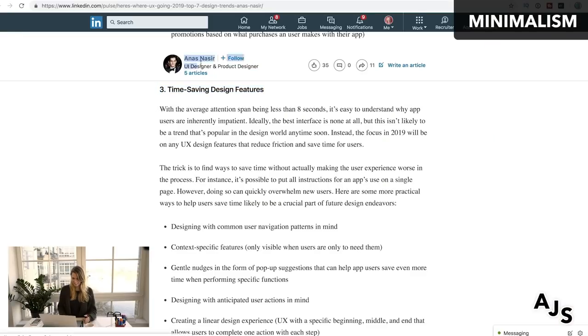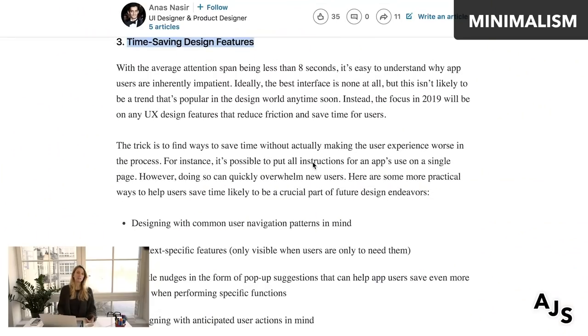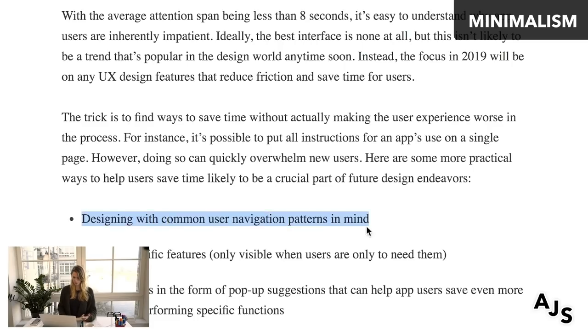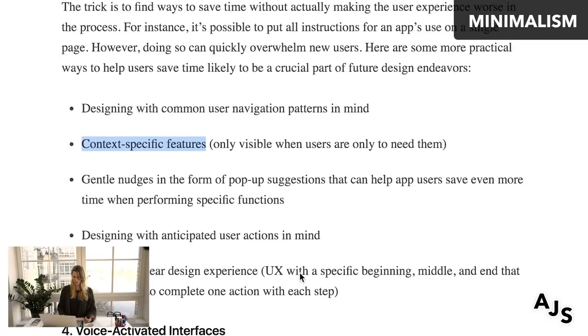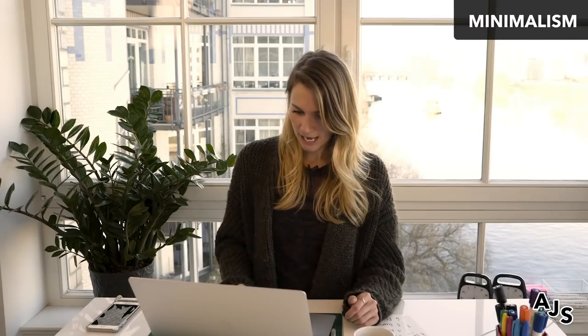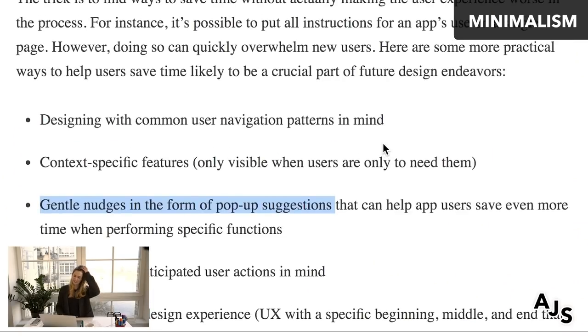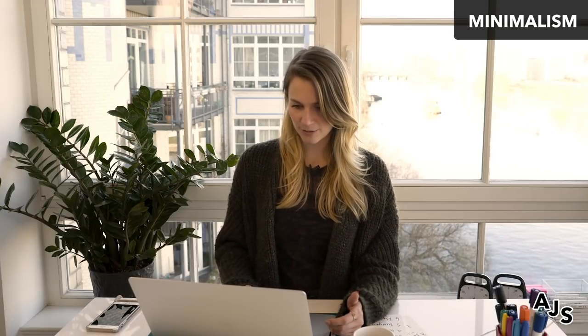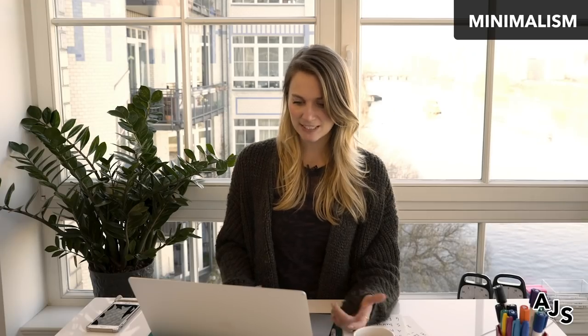Anas Nasir talks about time-saving design features — people are really busy, so you want to make sure that the time they spend using your product or service is for good reason and actually provides value for them. He talks about designing with common use and user navigation patterns, context-specific features, and what he calls 'gentle nudges.' He's talking about keeping the user in mind more going forward and addressing common issues like anxiety and overwhelm. He also talks about getting rid of common annoyances — people are using an average of 30 apps per month and about 10 a day.